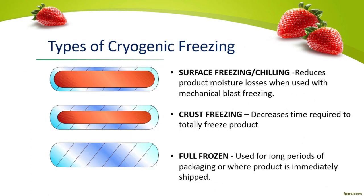Types of cryogenic freezing: Surface freezing or chilling reduces product moisture losses when used with mechanical blast freezing. Thrust freezing decreases the time required to totally freeze the product. Full frozen is used for long periods of packaging or where the product is immediately shipped.